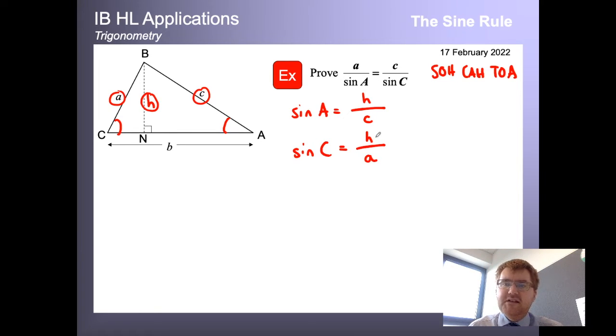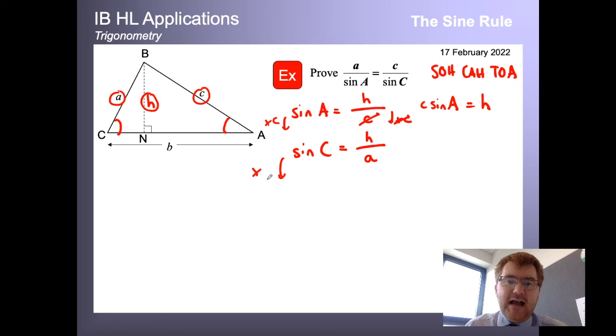And what we can do at this point is we can, for the top equation here, times both sides by C. So whatever you do to one side, you do to the other. This has the effect of cancelling the C's here. So that leaves me with H on the right hand side, and then sine A times C, which we can just call C sine A. And I'm going to do a very similar approach for the bottom equation. So I'm going to times by A on both sides. So what happens here is that this cancels. We get H on the right hand side, and then A times sine C is equal to A sine C.